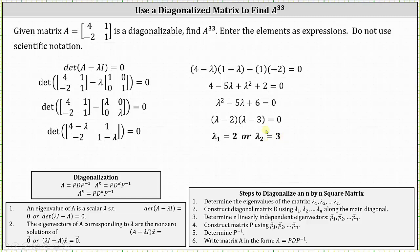We use these eigenvalues to form the diagonal matrix D, where we place the eigenvalues along the main diagonal and the other entries are zero. And now we find corresponding eigenvectors that will form the columns of matrix P.